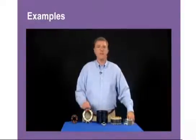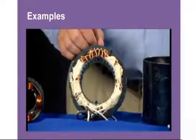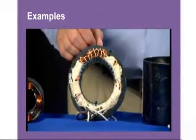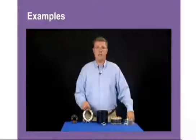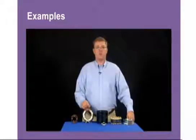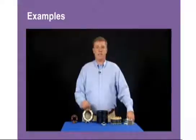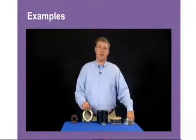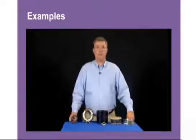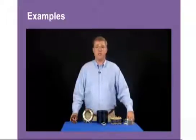The next type is a permanent split capacitor motor, or PSC. This type of motor has two sets of windings — an auxiliary start winding and a run winding — and both windings are always in the circuit. This makes the motor twice as efficient as a shaded pole motor. Any time it's possible to take a shaded pole motor out and replace it with a PSC, you should try and do it — for example, replacing a six-amp shaded pole motor with a three-amp PSC.